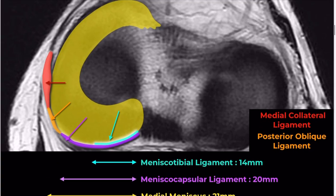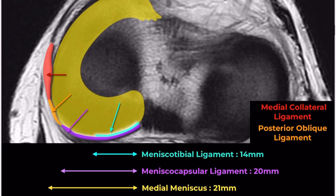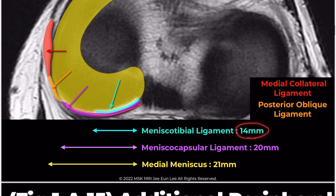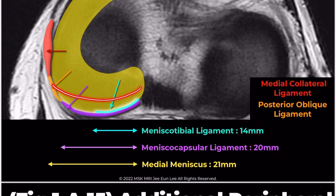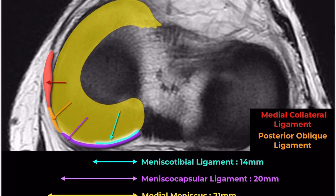Viewing sagittal images might spark curiosity about the medial to lateral lengths of these structures: meniscotibial ligament, 14 mm; meniscocapsular ligament, 20 mm; medial meniscus, 21 mm.